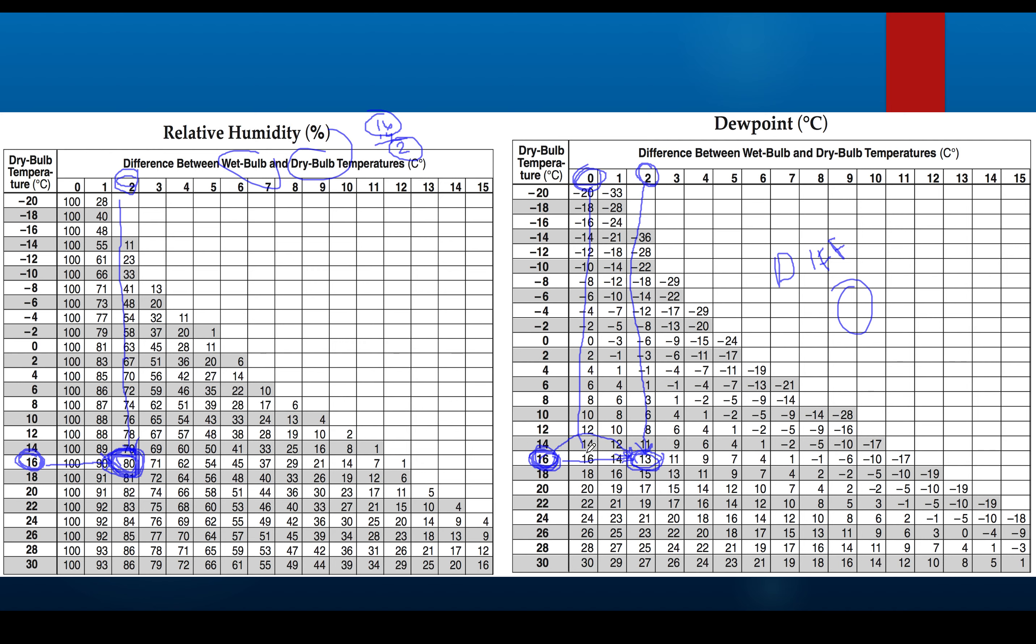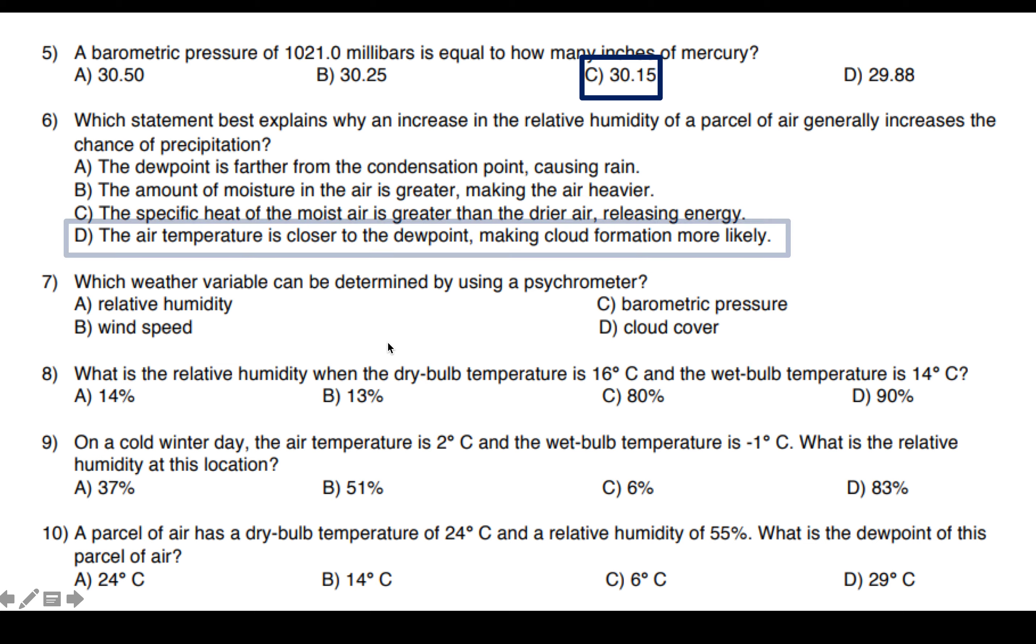The wet bulb and the dry bulb would have a difference of 0. Let's assume that, let's say, maybe they were both 16, or you could say they were both 13. In either case, the difference is 0 degrees Celsius. And any time that the difference is 0 degrees Celsius, if we look over here, the humidity is 100%.